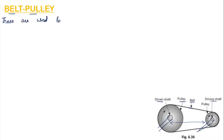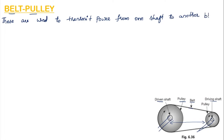From the driving shaft to the driven shaft, we are transmitting power with the help of this belt and pulley between parallel shafts, as shown in the figure. This arrangement is called the belt drive, and it mainly consists of three elements.